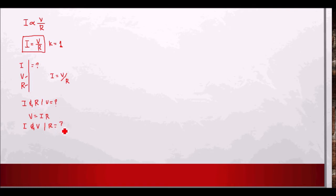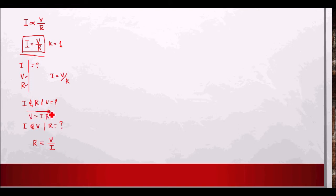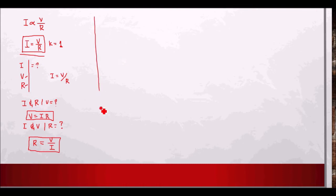If the given is the current and the voltage, we solve for resistance using algebraic manipulation: R = V/I. These are the three alterations of Ohm's Law depending on what is required in the problem or what is missing in the circuit. These three formulas can be harder to memorize, so there is a technique — the Ohm's Law triangle.